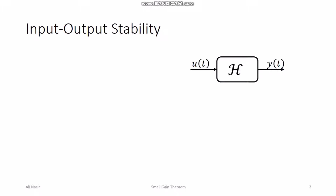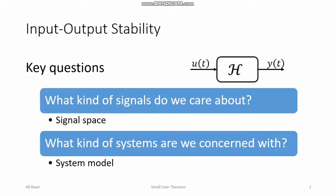Input-output stability, as the name suggests, is relevant to the input and output signals of any system. Before we talk about input-output stability, the key questions we should be asking are: what kind of signals are we interested in — what kind of input and output signals — and this leads us to the signal space that any signal should belong to in our analysis. The second question is: what kind of systems are we concerned about — LTI systems, dynamical systems, nonlinear systems, or discrete-time systems?